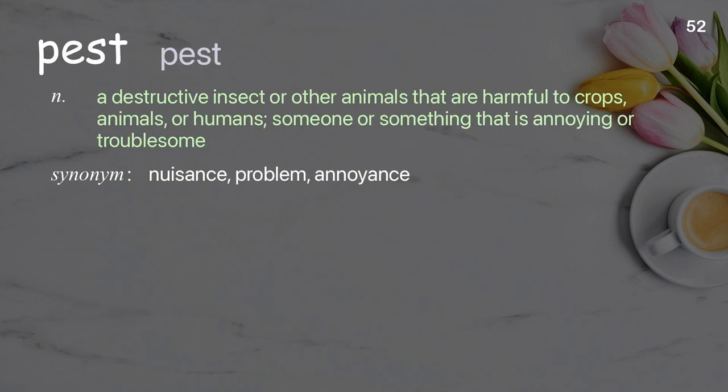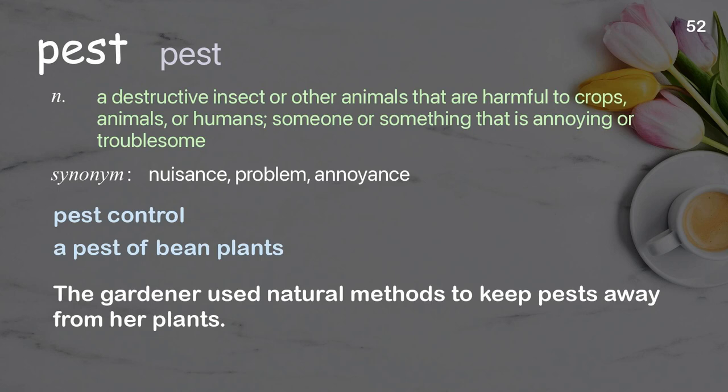Pest: A destructive insect or other animal that is harmful to crops, animals, or humans; someone or something that is annoying or troublesome. Examples: Pest control, a pest of bean plants. The gardener used natural methods to keep pests away from her plants.